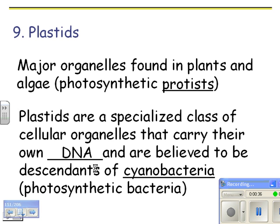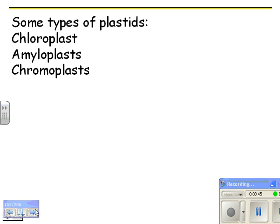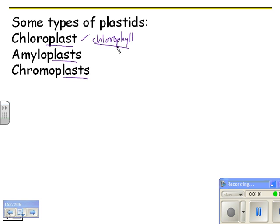A chloroplast is one example of a plastid, and that's really the main one you need to know. There might be one question on the others, but chloroplasts are a big deal. Chloroplasts are green because they have the pigment chlorophyll in them. 'Plast' means it's an organelle, and chlorophyll is the green pigment found in chloroplasts.